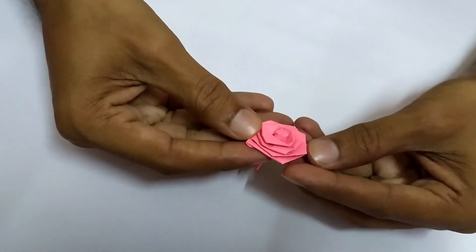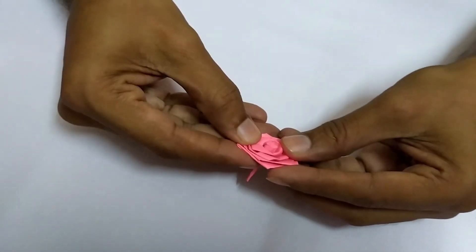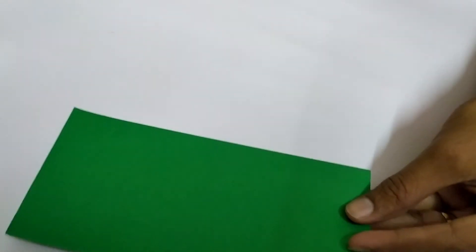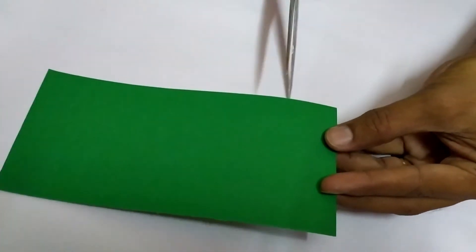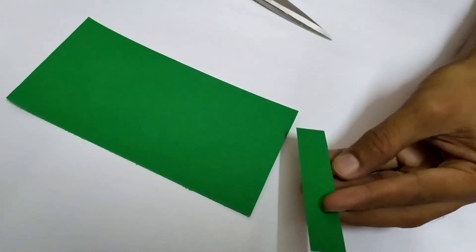So nice, right? It's a rose. Now you need to keep it aside and then take a small strip like this. Then you cut a small strip like this.